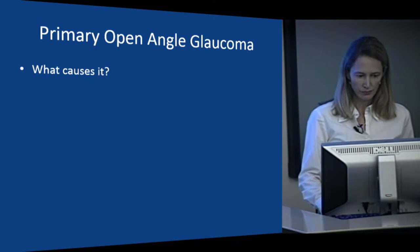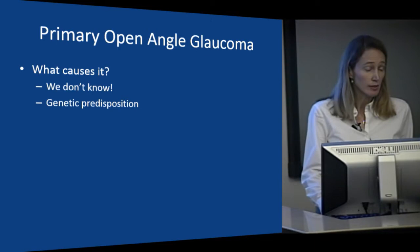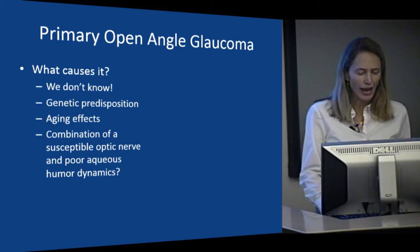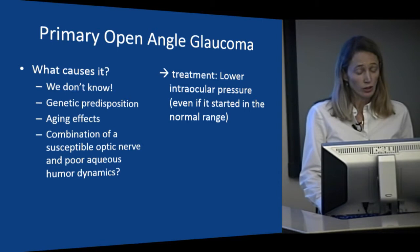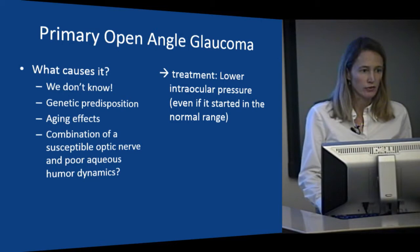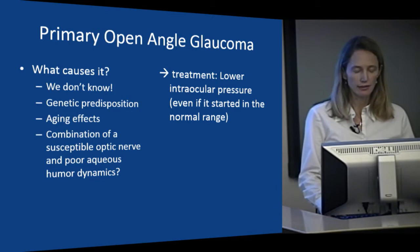What causes primary open angle glaucoma? We don't know. But there does seem to be a genetic predisposition, and aging effects play an important role. Perhaps there's a combination of a susceptible optic nerve and poor aqueous humor dynamics brought on with age. Regardless, the only treatment that's ever been proven effective to reduce vision loss from glaucoma is lowering the intraocular pressure. We've looked at exercise and diet, different lifestyle issues, but the only thing that works is lowering the pressure — even if it was in the normal range to start.